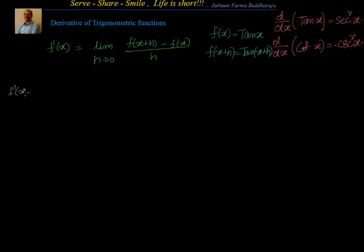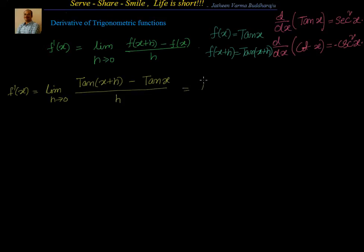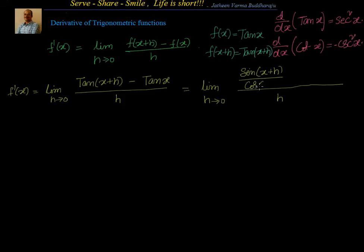We will have f'(x) = limit as h tends to 0 of [tan(x+h) - tan(x)] / h. We will write tan(x+h) as sin/cos, so we can write it as sin(x+h)/cos(x+h) minus sin(x)/cos(x), all divided by h.